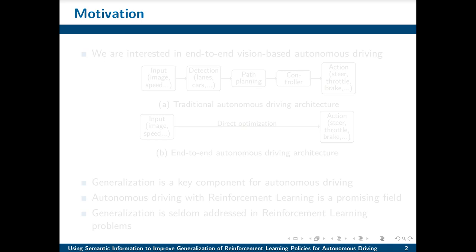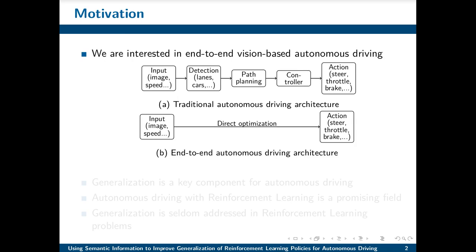What motivation do we have for this work? We are interested in vision-based autonomous driving, and more precisely in end-to-end autonomous driving, which is a direct mapping from raw inputs to driving commands. We think it is promising because there is no need to separately optimize its subsystems, which is the case in traditional autonomous driving approaches. Also, generalization is a key component for autonomous driving. Indeed, autonomous cars have to deal with unknown situations like new towns or different driving conditions.